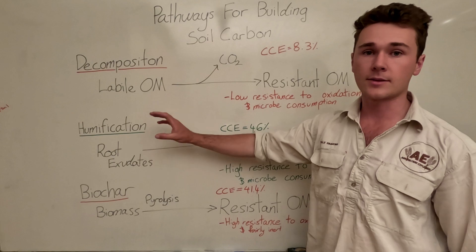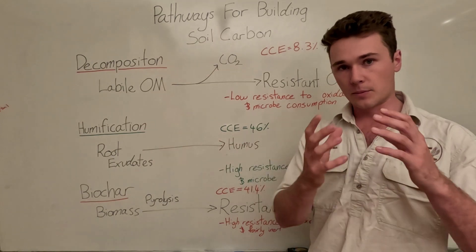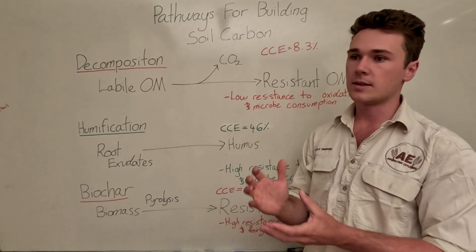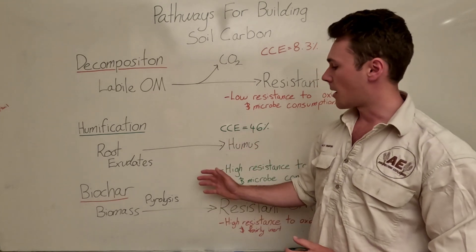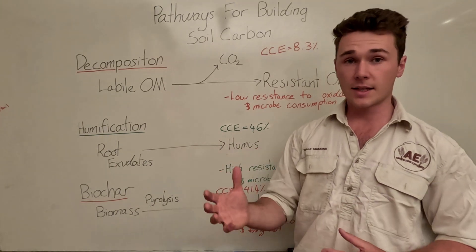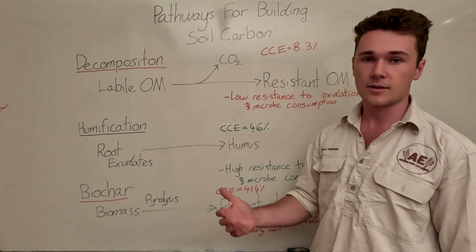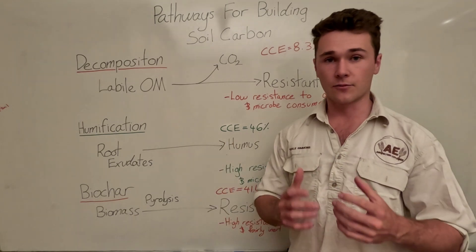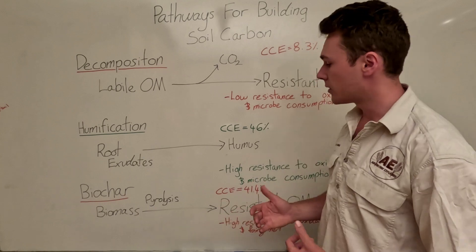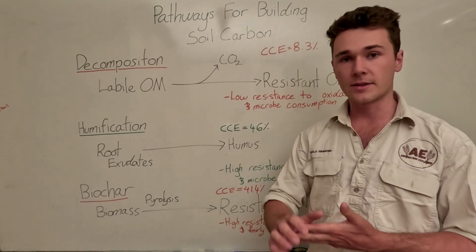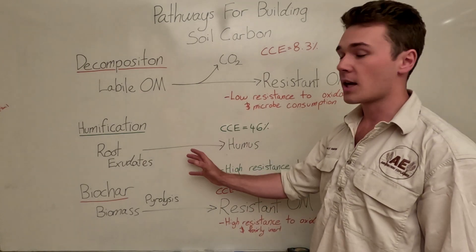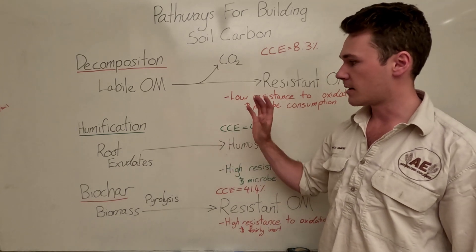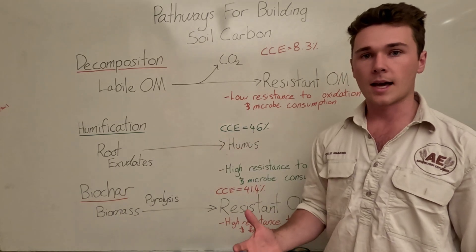The next pathway is significantly better, and that's humification. This is where we take root exudates — the plant produces root exudates and gives them to mycorrhizal fungi — and the mycorrhizal fungi go into soil aggregates and build organo-mineral complexes called humus. This is a very efficient process: about 46 percent of the carbon that enters this system ends up as humus, which is part of our stable soil organic matter component. Humus is a really important substance in our soil and contributes a lot to the chemical, physical, and biological properties of the soil. This is the most beneficial way of building soil organic carbon, and as farmers we need to be tapping into humification.